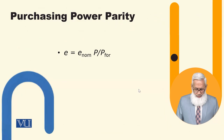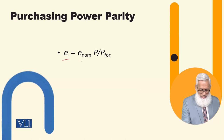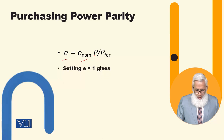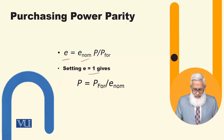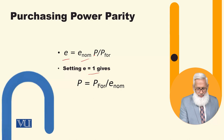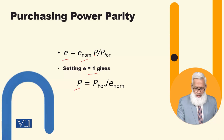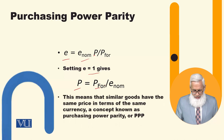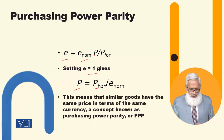So purchasing power parity — calculate the equation. This is the real exchange rate, this is the nominal exchange rate, this is the domestic price, and this is the foreign country price. This means that similar goods have the same price. So if we assume that the real exchange rate is equal to one under this assumption, then this equation holds — it's expressed in terms of the same currency.